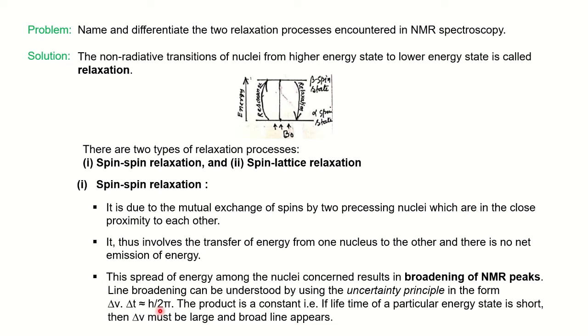We can understand this using the uncertainty principle: Δν × Δt is approximately constant, equal to h/2π, where h is Planck's constant, t is lifetime, and ν is frequency. Since the product must be constant, if lifetime is short, then Δν must be large, meaning the lines are broad.